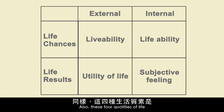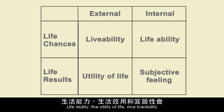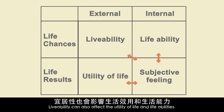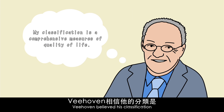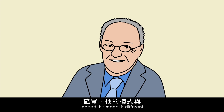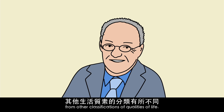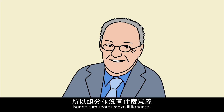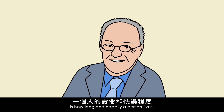These four qualities of life are connected and interrelated. Lifeability, utility of life, and livability will affect and directly impact one's subjective feeling. Livability can also affect the utility of life and lifeability. Wienhoven believed his classification is a comprehensive measure of quality of life. His model is different from other classifications; these qualities cannot simply be added together, and some composite scores make little sense. The best available summary indicator is how long and happily a person lives.